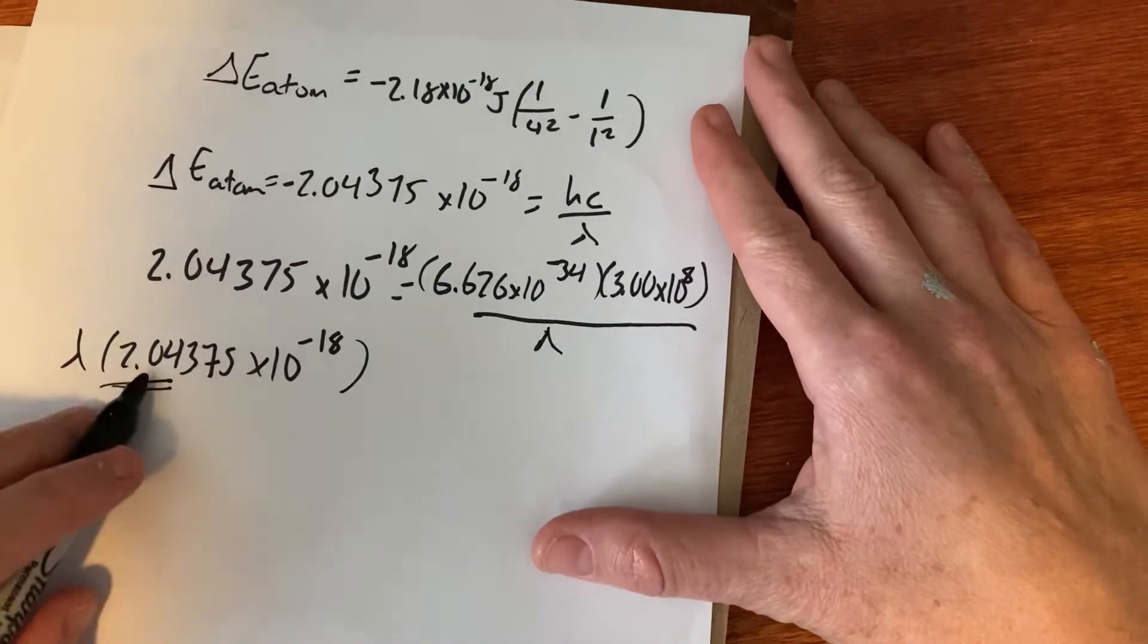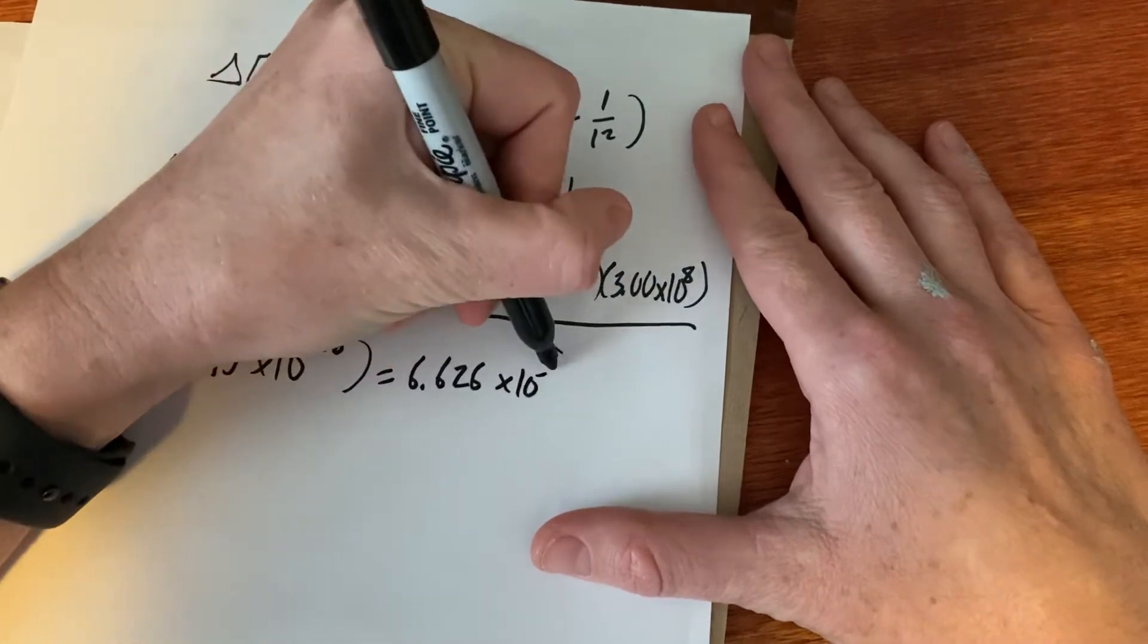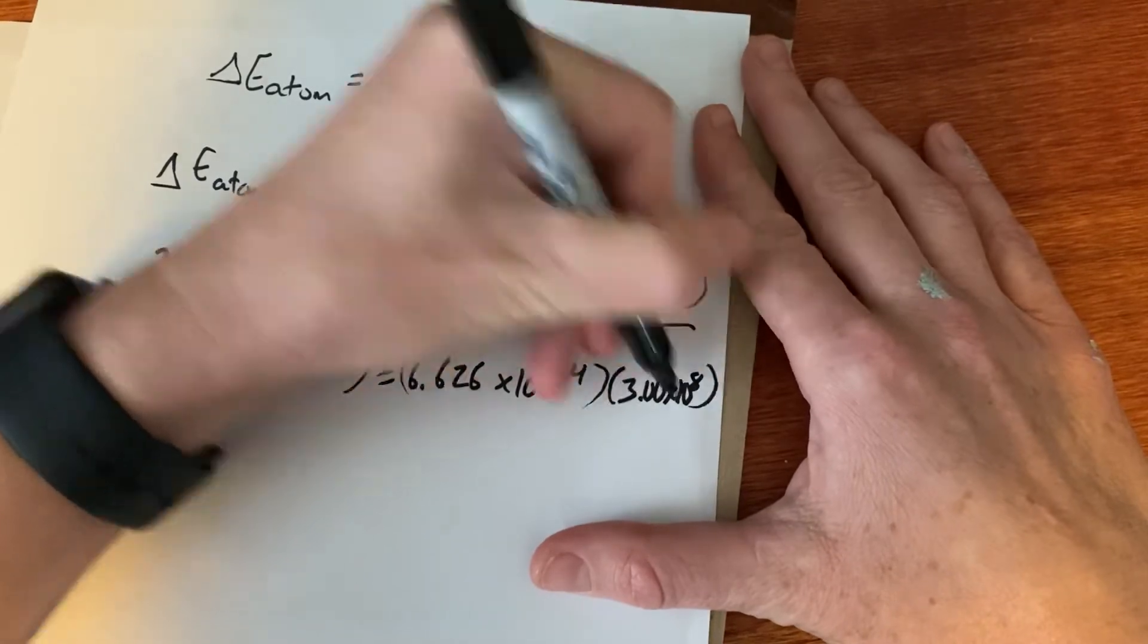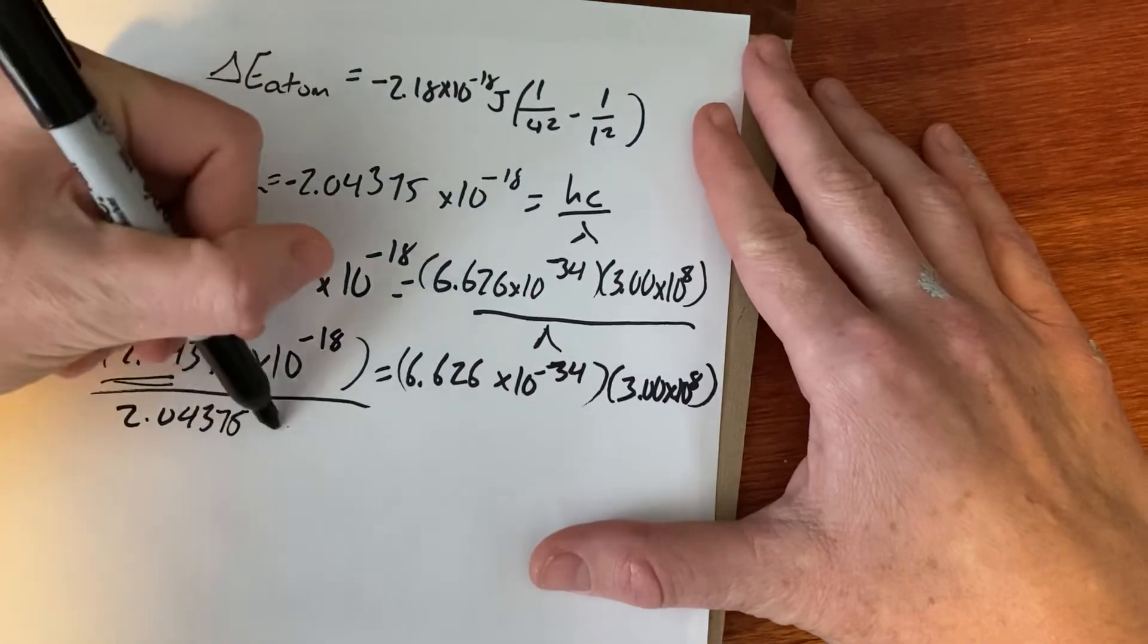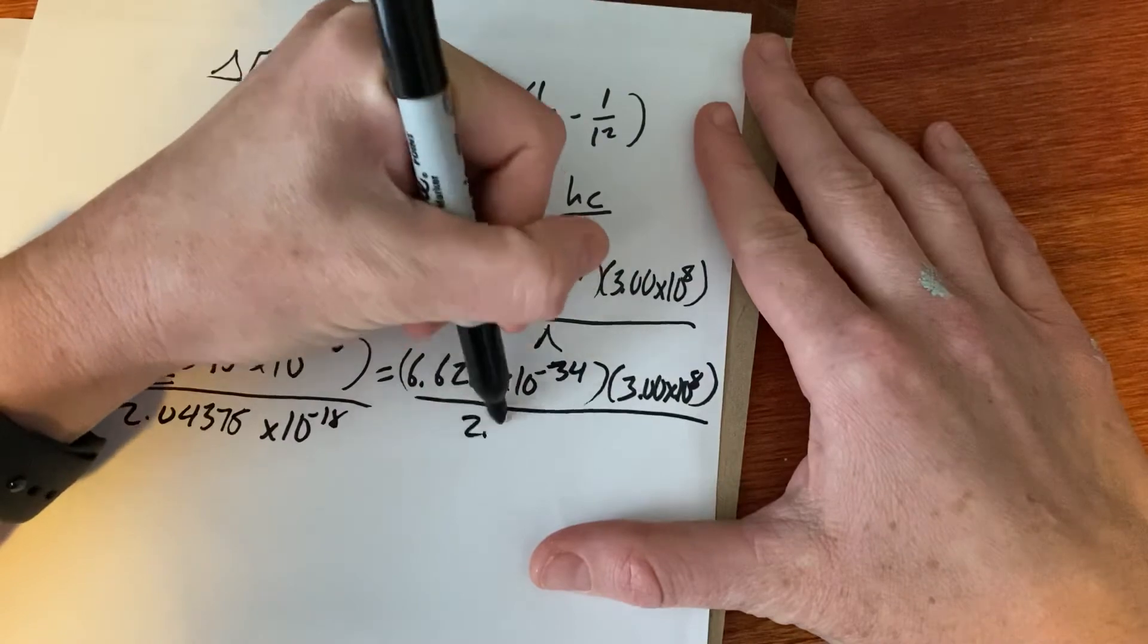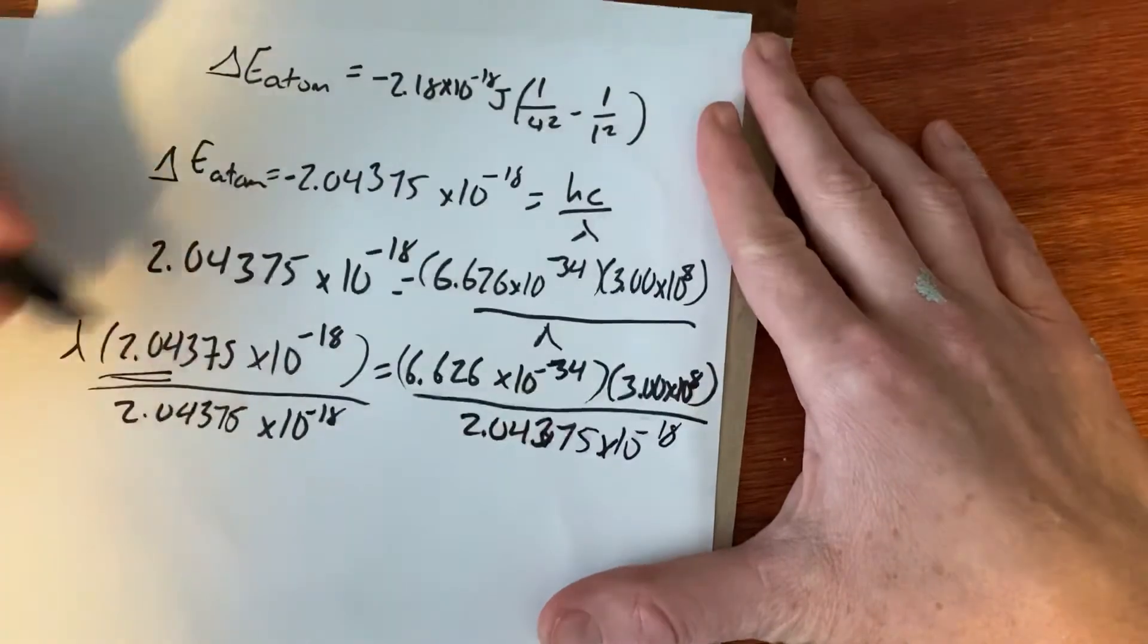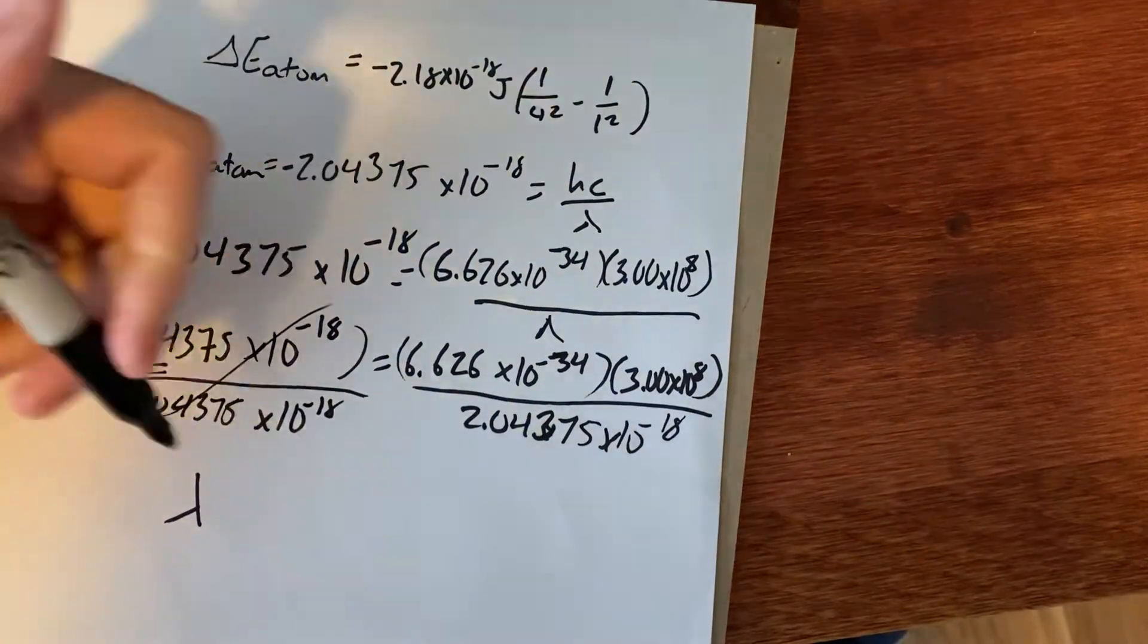So we have lambda times that is equal to 6.626 times 10 to the negative 34 times 3 times 10 to the eighth. And then I'm just going to divide each side by 2.04375 times 10 to the negative 18. When you do this, you get an answer of lambda equaling, I think I got the same answer again,